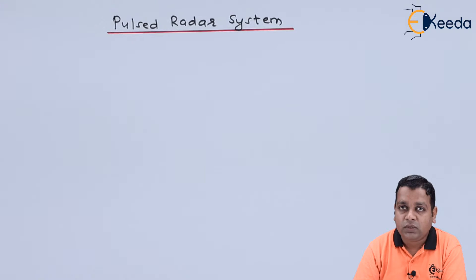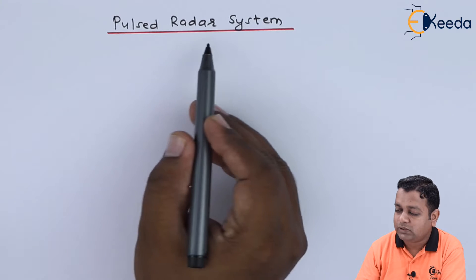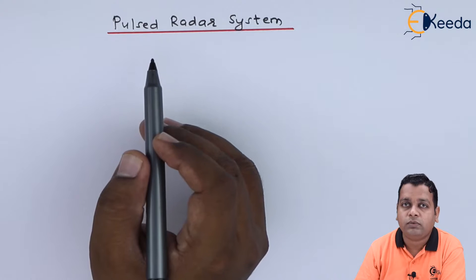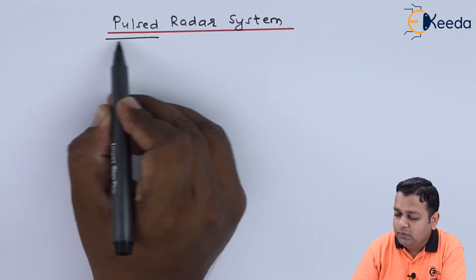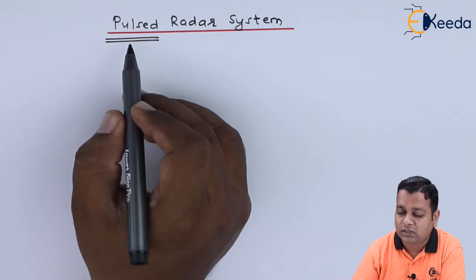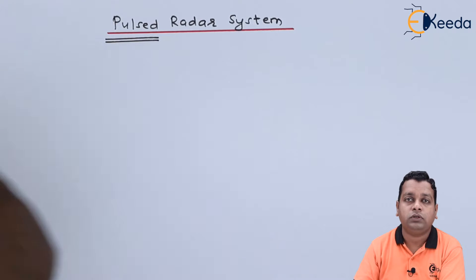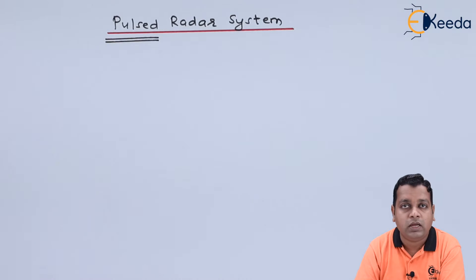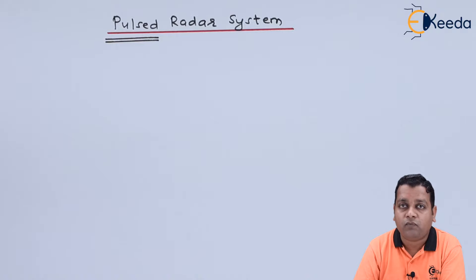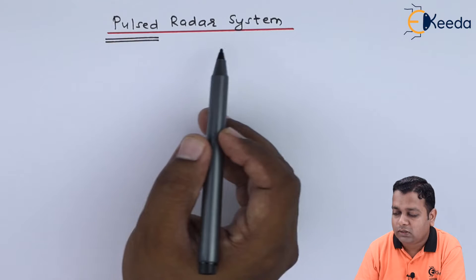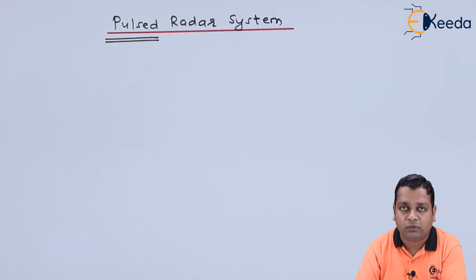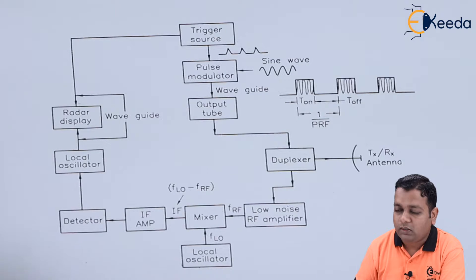The topic is titled pulsed radar system. From the name of the topic you can guess that in this radar system the transmitter section will be transmitting the signal in pulse form, which has modulation with respect to sine-type waves. For such a pulsed signal we have the previous derivation also. Let us see the details of various blocks responsible to complete the operation of the pulse radar system. So let us have the block diagram first of all.